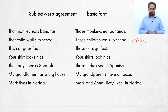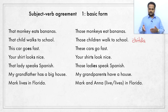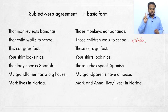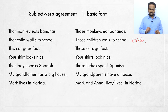Here's one more example, but this one is going to be a little tricky. 'Mark lives in Florida.' Mark is the name of one man, so we say lives — singular verb. But what if Mark has a wife, Anna? Would you say 'Mark and Anna lives in Florida' or 'live in Florida'? Well, Mark is one person — singular. Similarly, Anna is one person — singular. However, Mark and Anna are two people, so this is a plural form. We need a plural verb. Remember that a plural verb does not take an S at the end, so 'Mark and Anna live in Florida.'